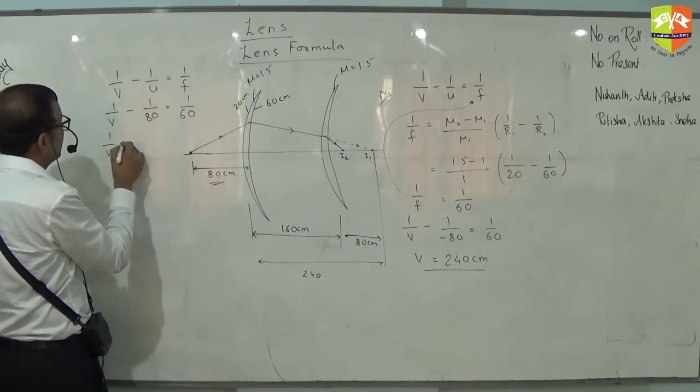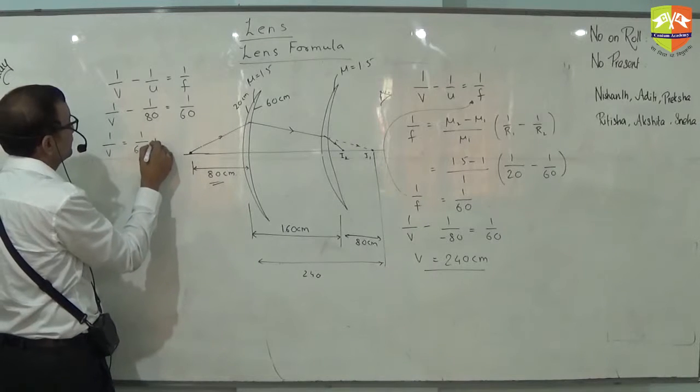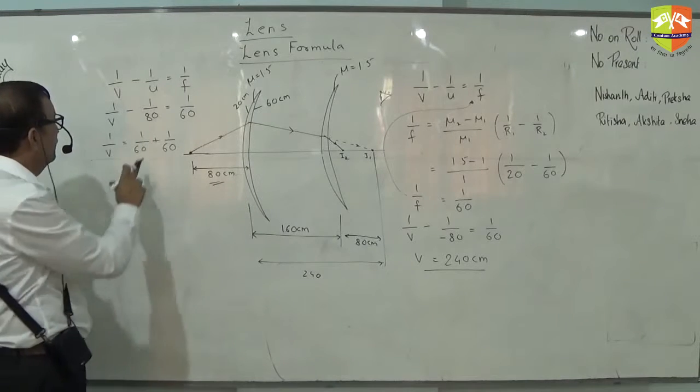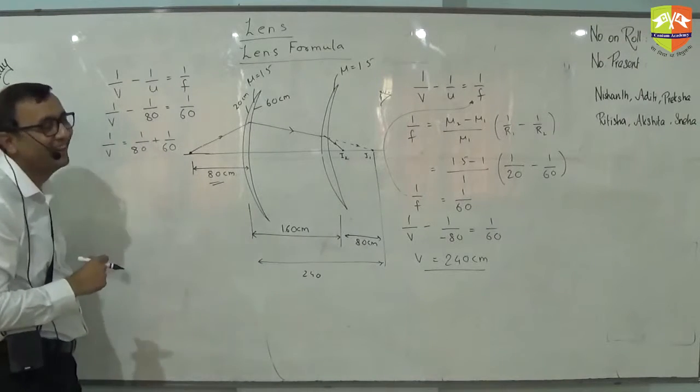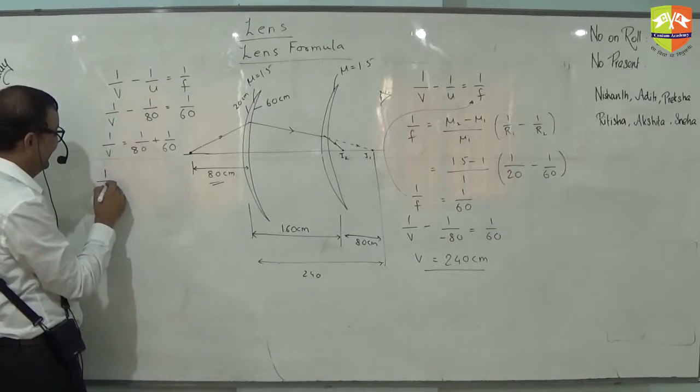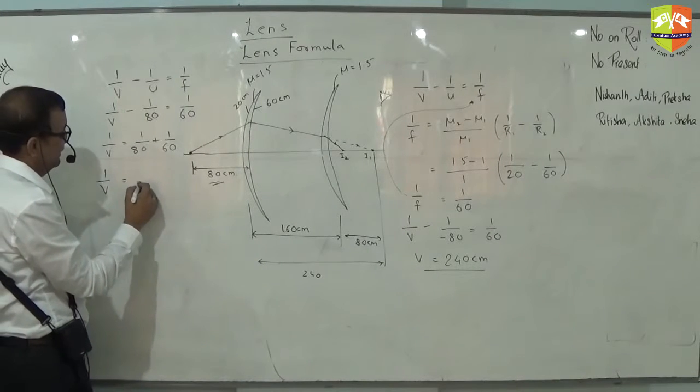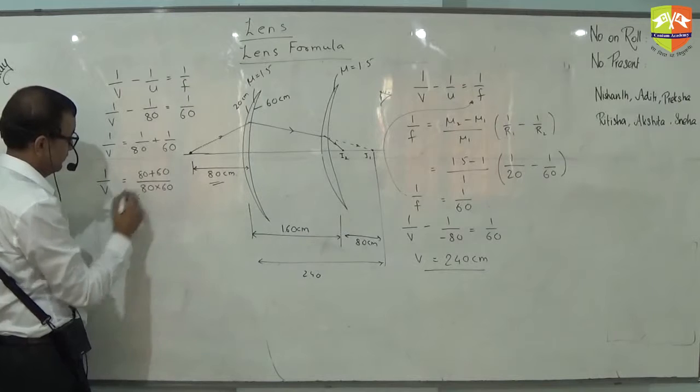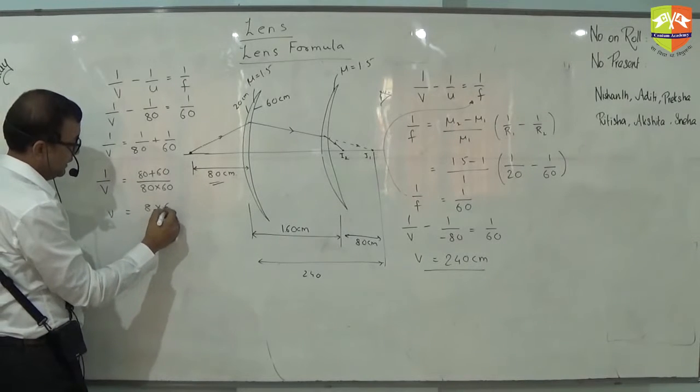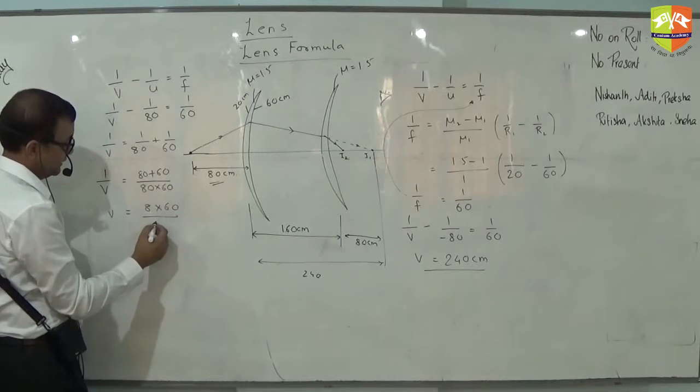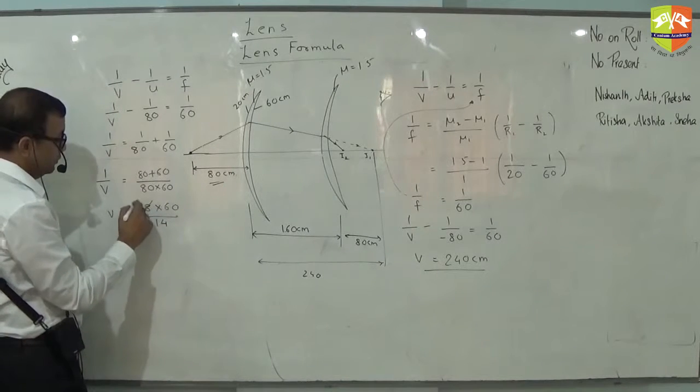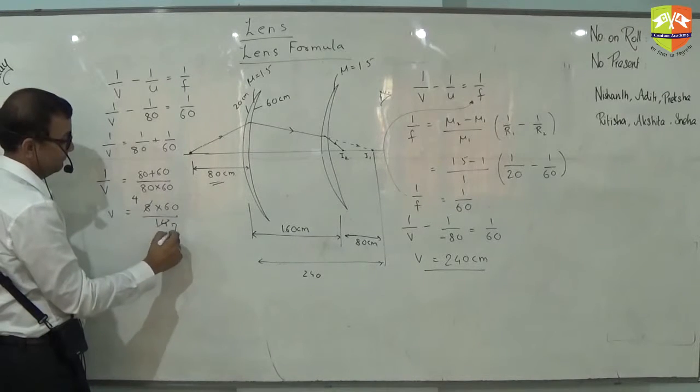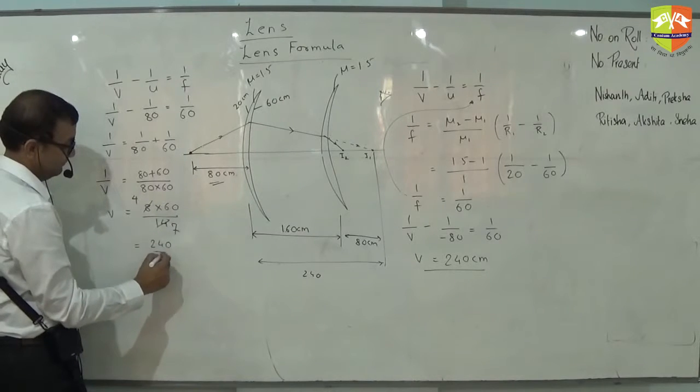You guys made errors in addition. So v is 8 plus 6 is 14. So v is 240 by 7.